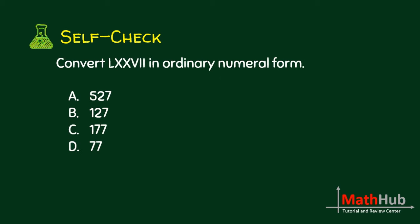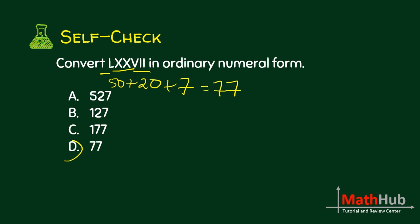Convert this Roman numeral to ordinary form. L is 50, XX is 20, and VII is 7. So the answer is 77, letter D.